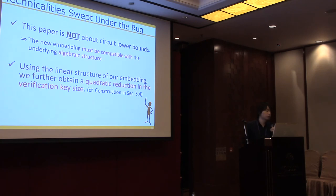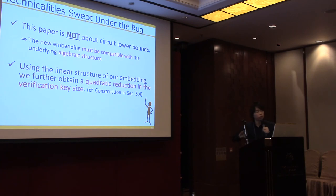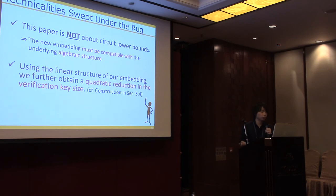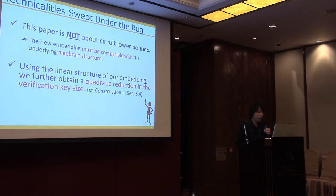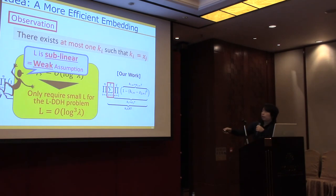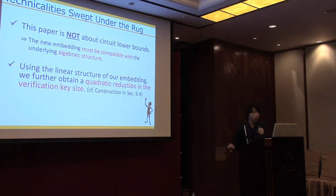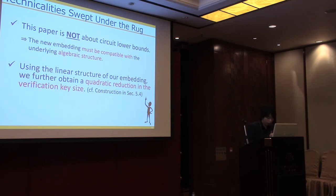There are many technicalities swept under the rug. This paper is not about circuit lower bounds — the key point is that all encodings must be compatible with the algebraic structure that the VRF offers. Since the encoding differs from Yamada's original scheme, the actual construction is quite different. Furthermore, taking advantage of this linear structure, we can additionally obtain a quadratic reduction in verification key size. This is the high-level idea of our VRF scheme.